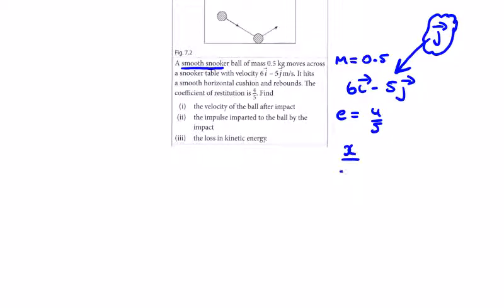After over before, which is x over minus 5, equals minus e. So x over minus 5 equals minus 4 over 5. We get 5x equals 20, so x equals 4. After impact, the velocity becomes 6i plus 4j.